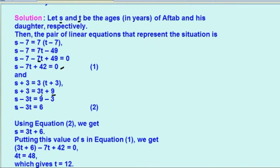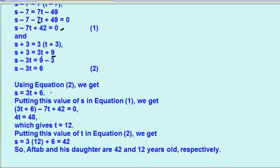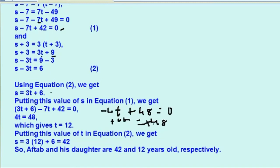Using equation 2 we get S equals to 3T plus 6. यह बन जाएगा हमारा equation 3. अब S की value को हम equation 1 में replace कर देंगे. तो यह हो जाएगा 3T plus 6 minus 7T plus 42 equals to 0. तो 3T minus 7T हो जाता है minus 4T, और 42 plus 6 हो जाएगा plus 48 equals to 0. अब 48 को इस तरफ ले लें तो minus 4T equals to minus 48.